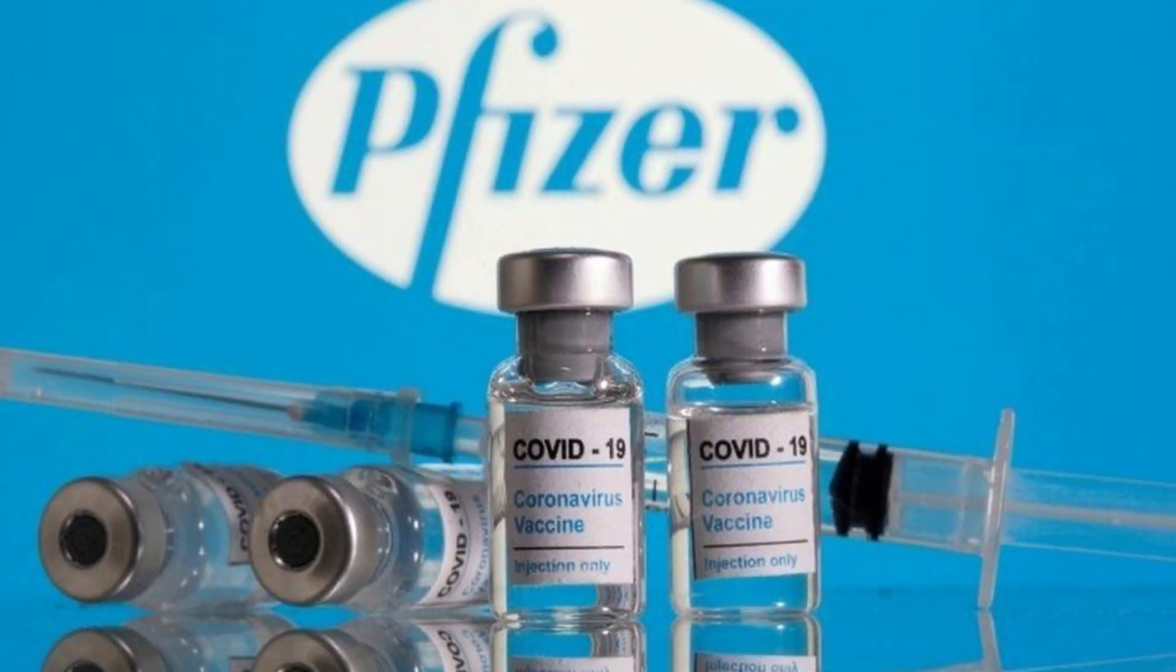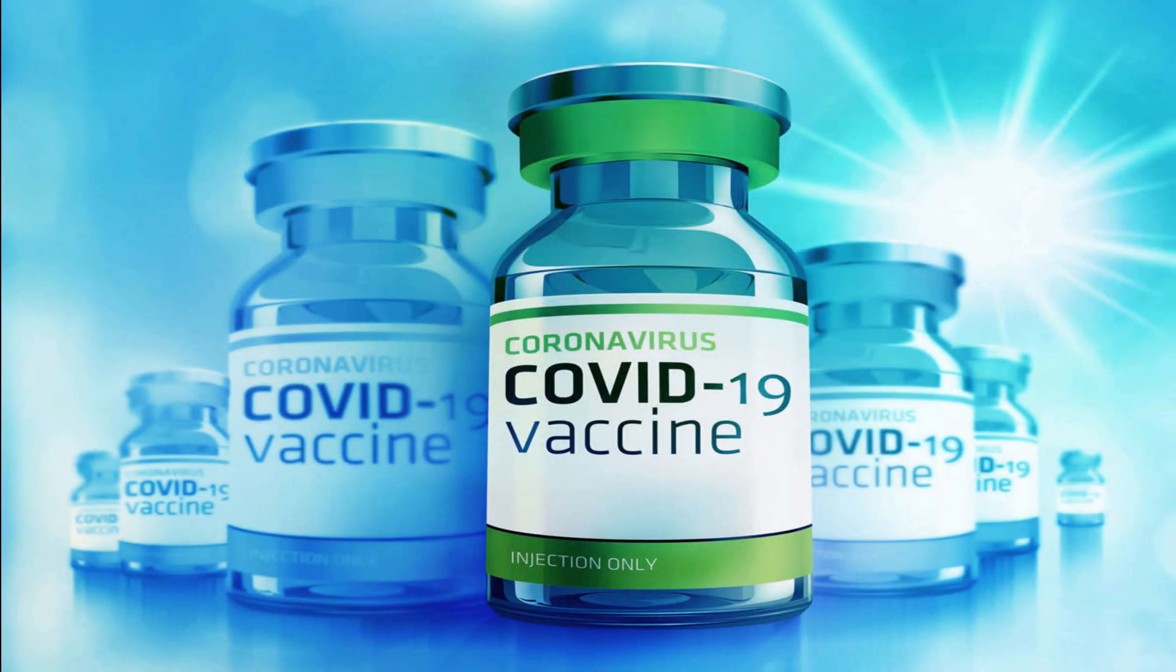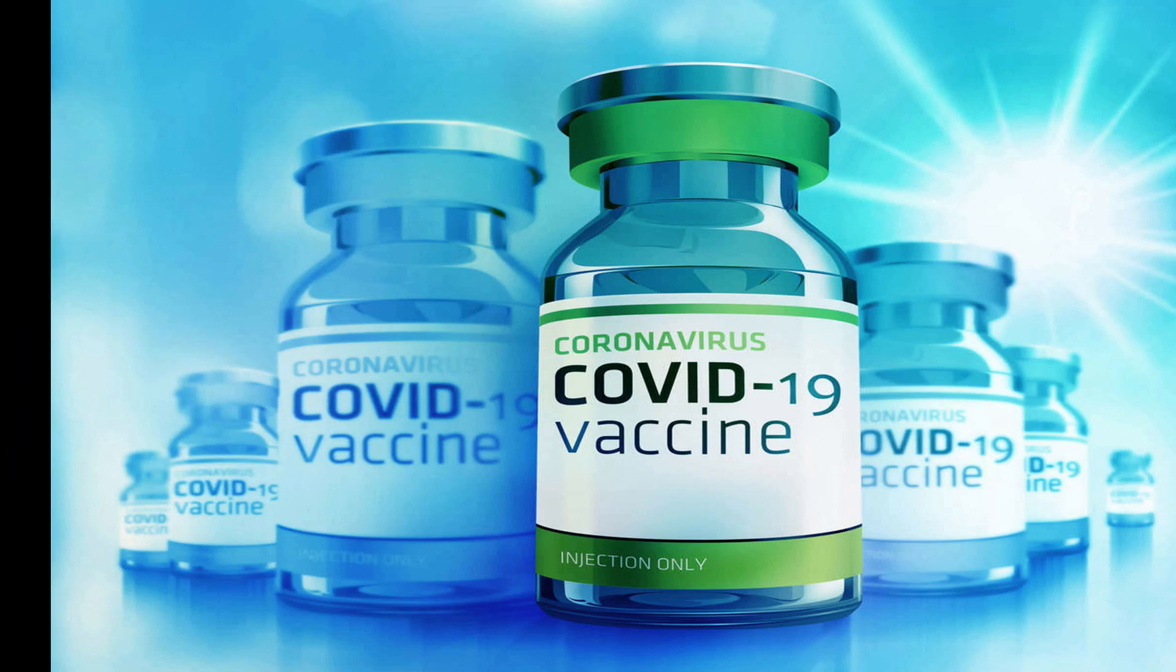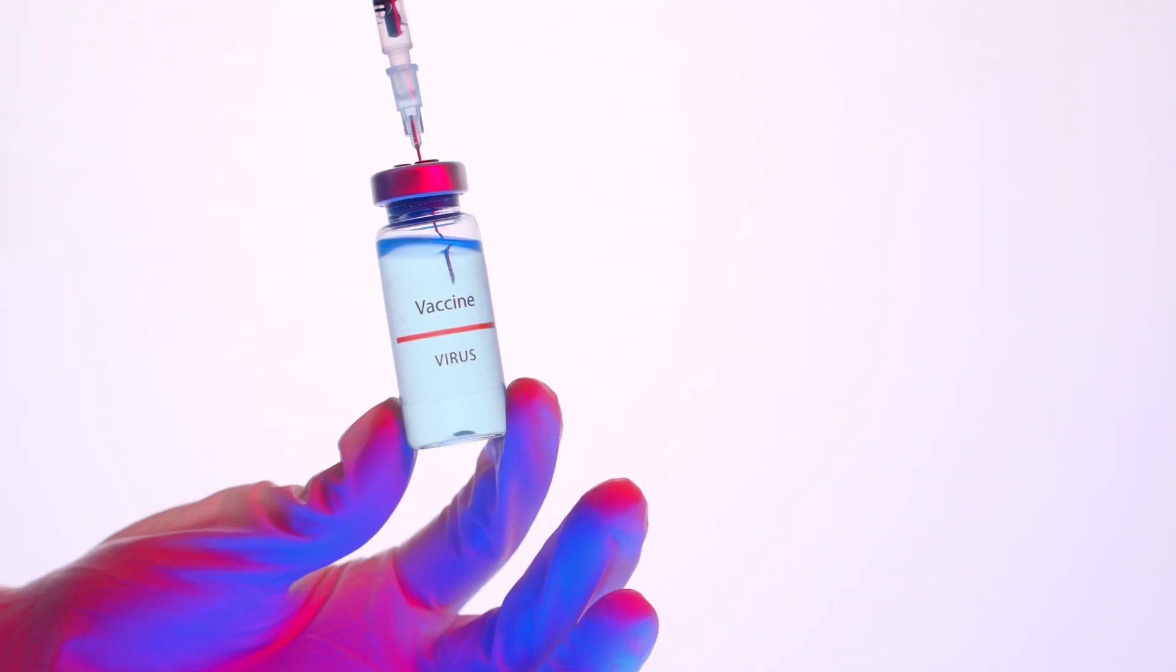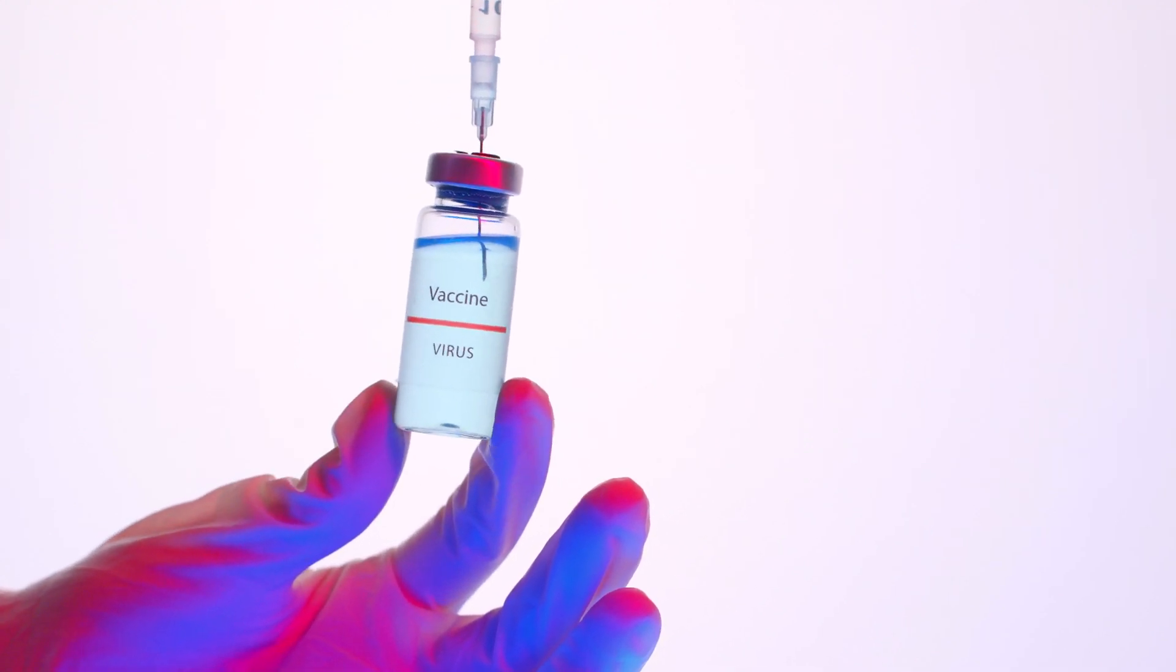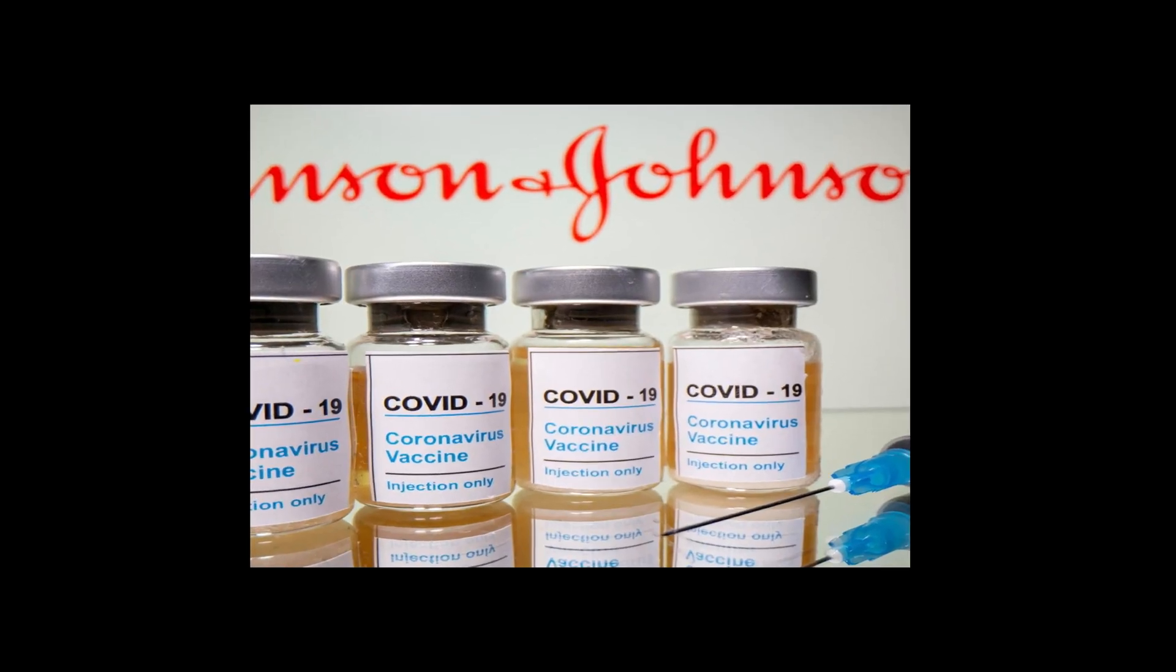If you get a COVID-19 vaccine that requires one shot, you are considered fully vaccinated two weeks after your shot. Johnson & Johnson's Janssen COVID-19 vaccine only requires one shot.